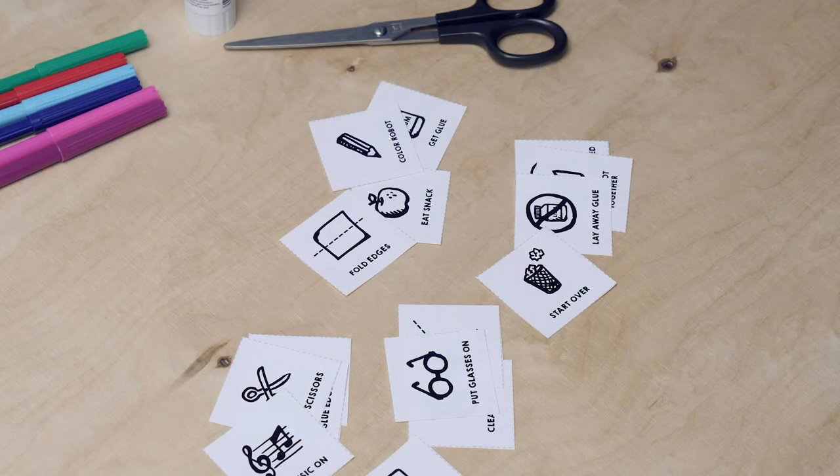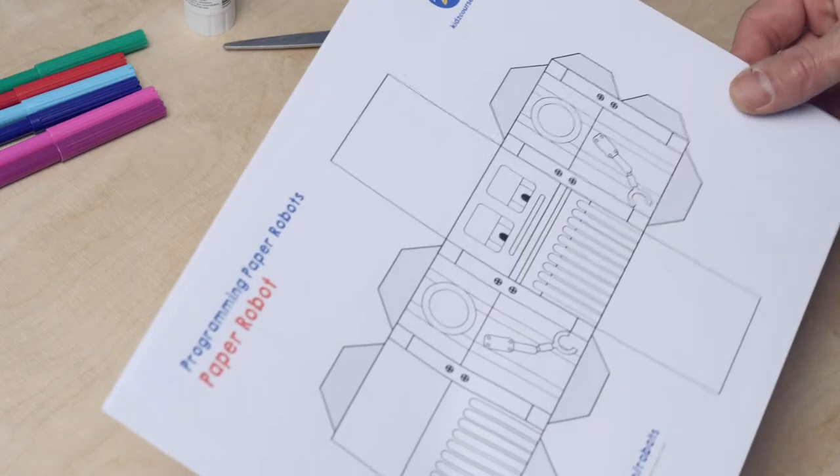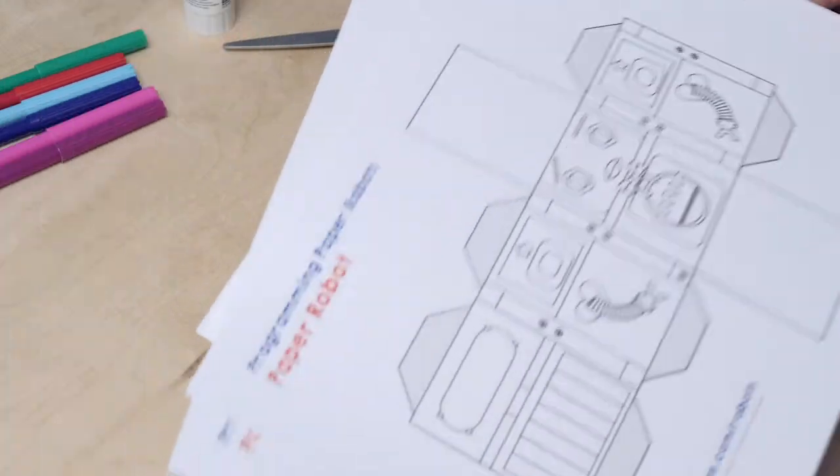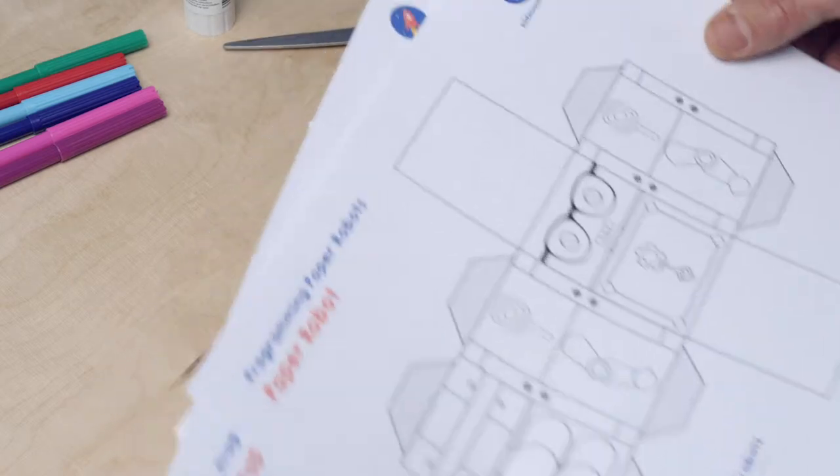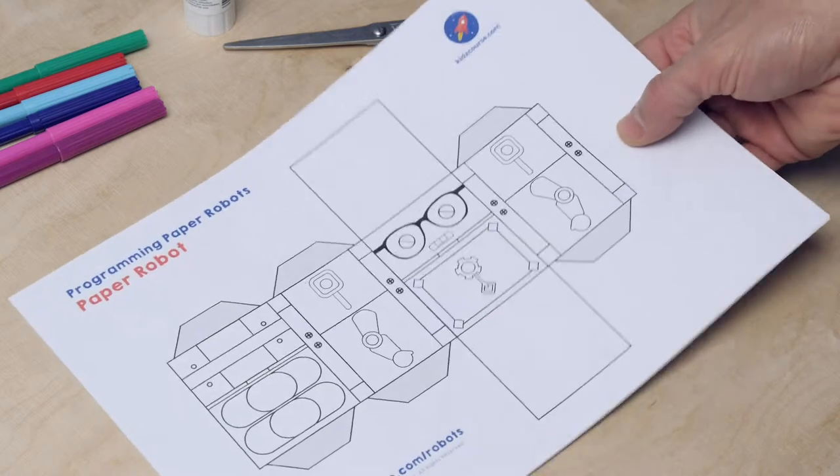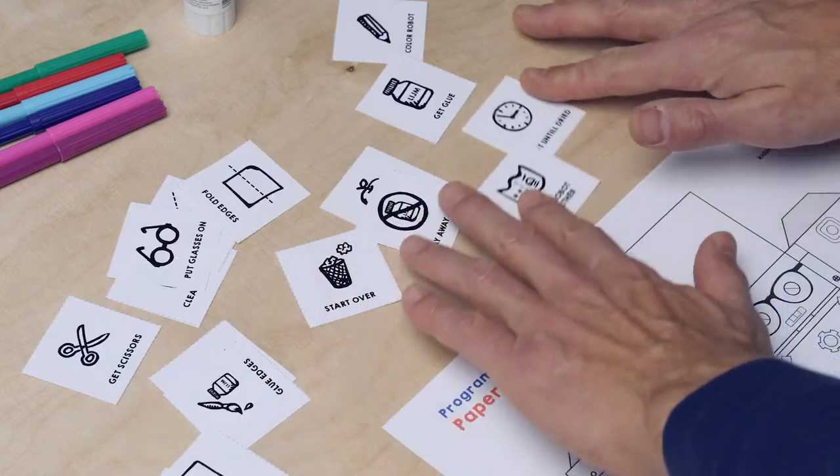Now we are going to write a program or just program a paper bot. You do that by placing the cards in the correct order. First, choose the bot that you want to build for your robot. I choose this one. Now the program. What should the robot be able to do?